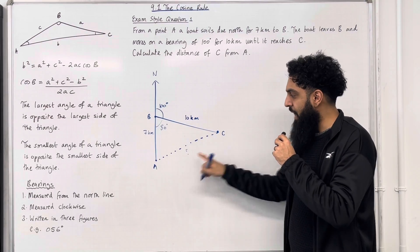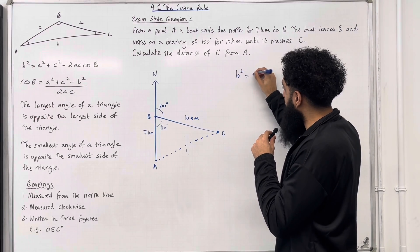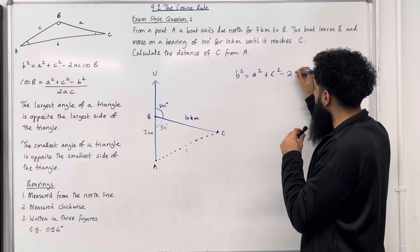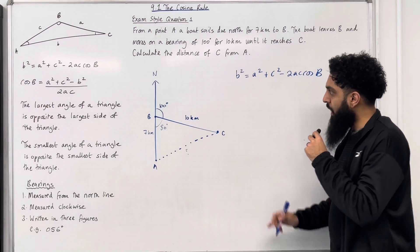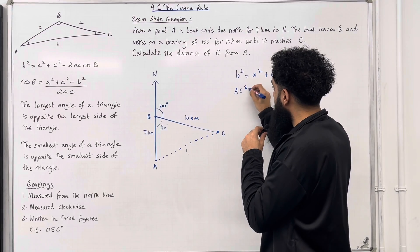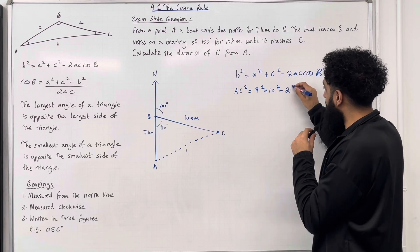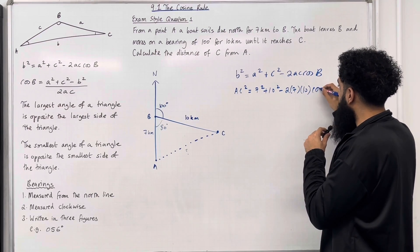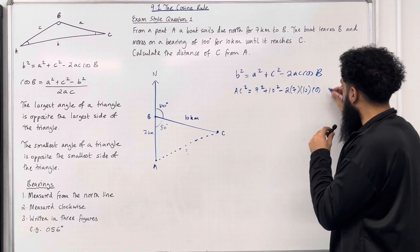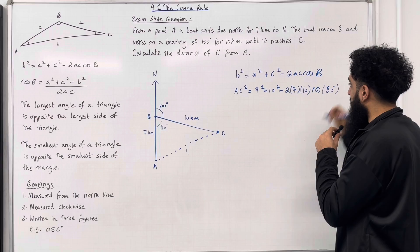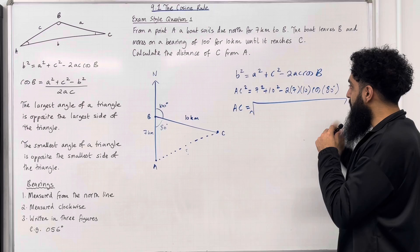Now we want to work out the distance of C from A. In other words, we are trying to work out the distance AC. We know that the cosine rule states that b squared equals a squared plus c squared minus 2ac cos B. So using the cosine rule, AC squared equals 7 squared plus 10 squared minus 2 lots of 7 multiplied by 10 cosine of the angle 80 degrees. So that 80 degrees is opposite the side AC. Now to work out AC, I can simply take the square root of my calculation.